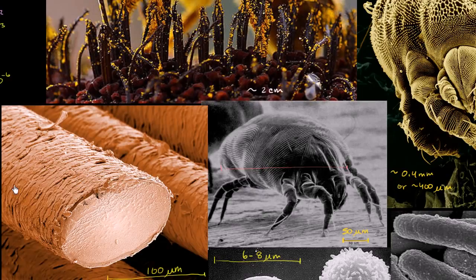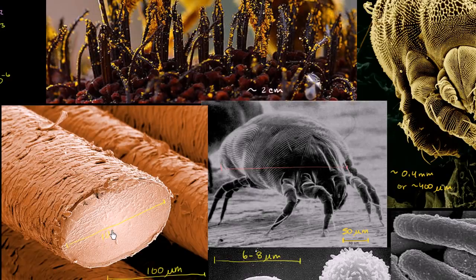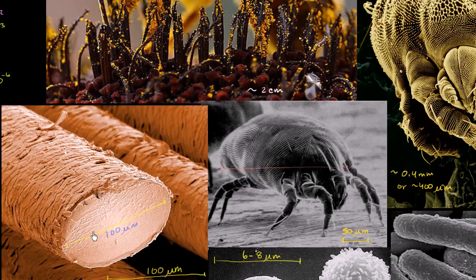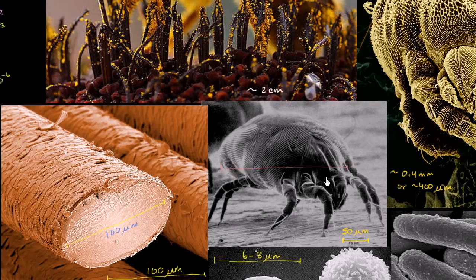But the diameter of human hair, and this is on average, the diameter of human hair is about 100 micrometers thick. That's the diameter. So it's about 1 4th the length of a dust mite.